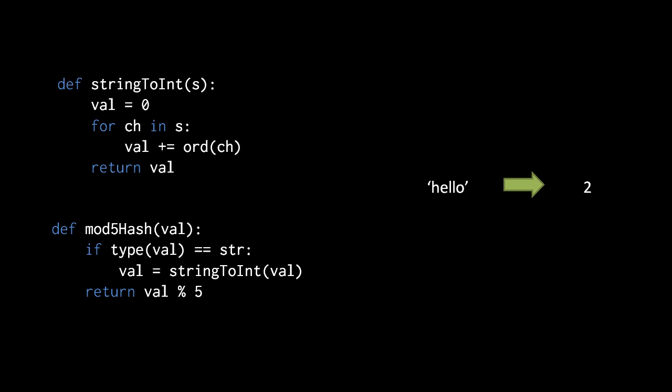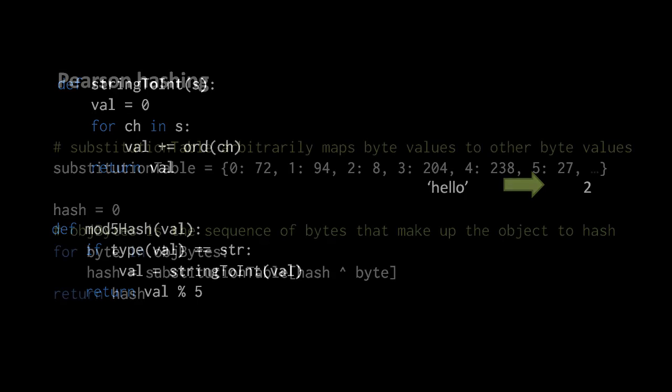For example, if we now pass in the string hello, all in lowercase, to mod5 hash, what we get back is the value 2.